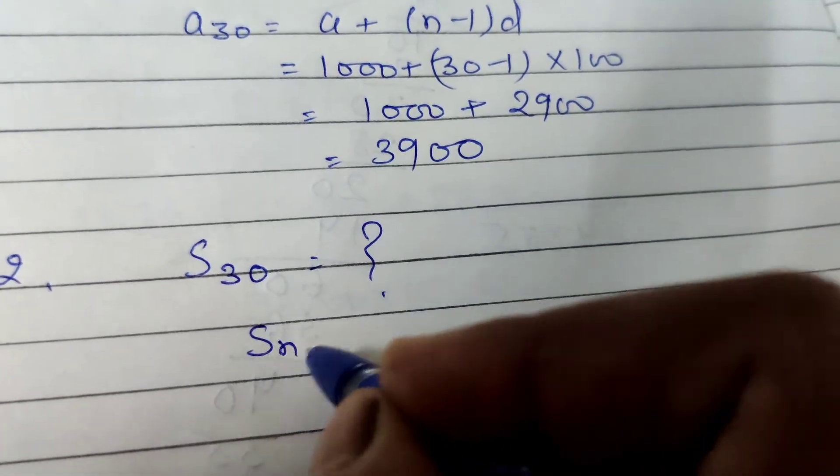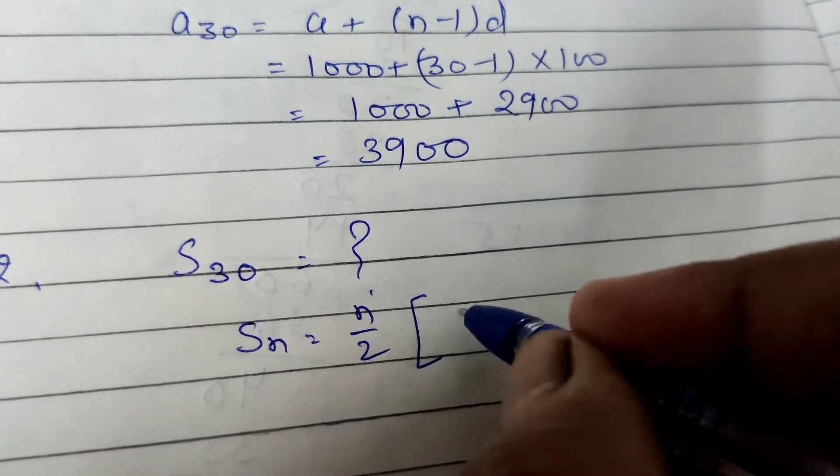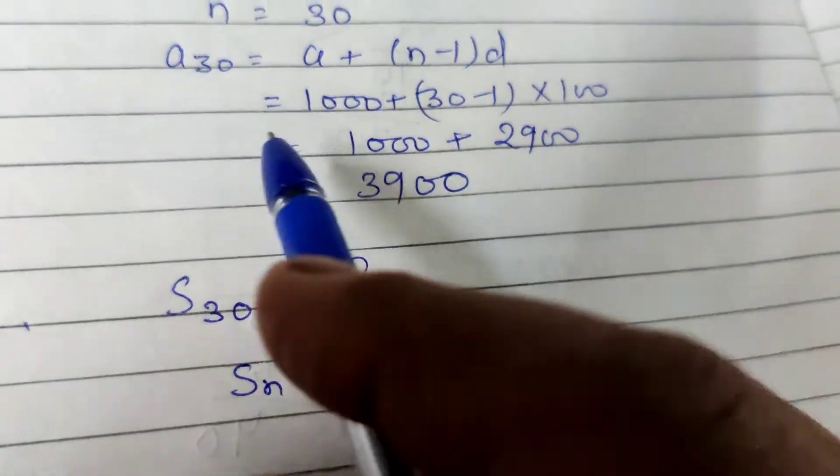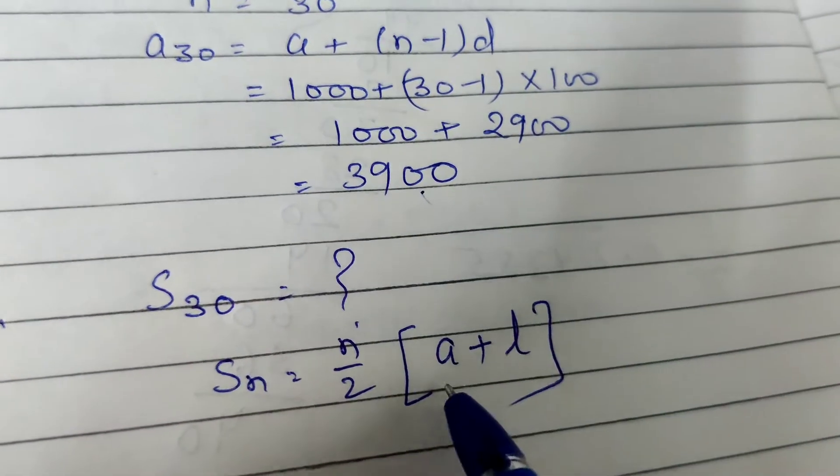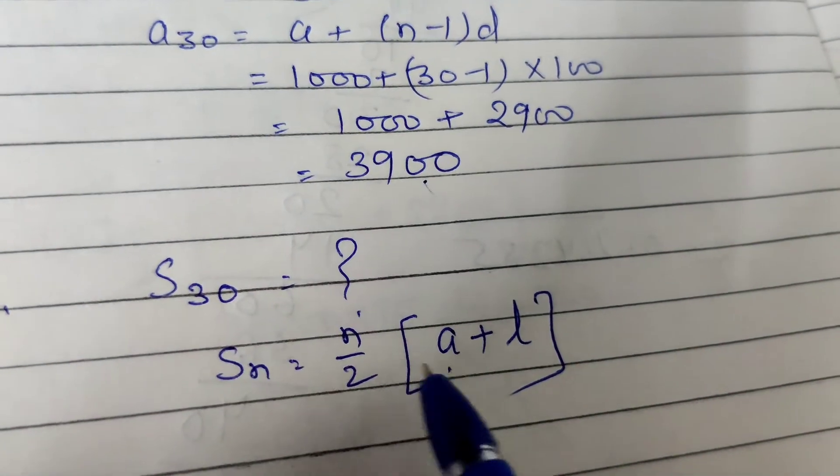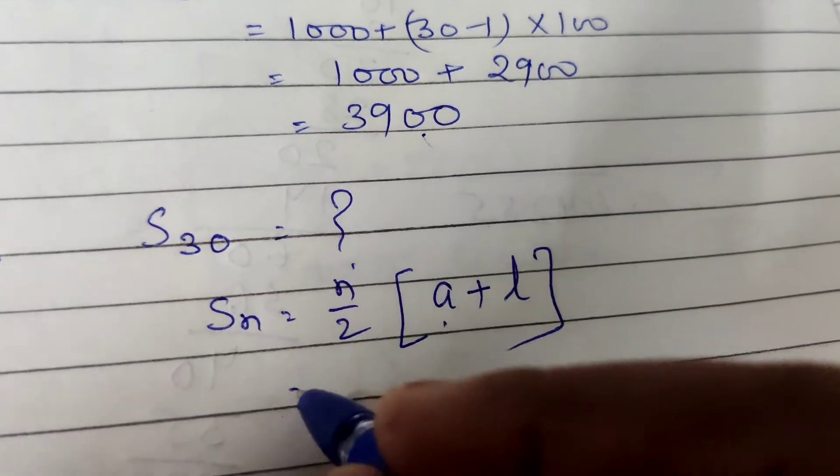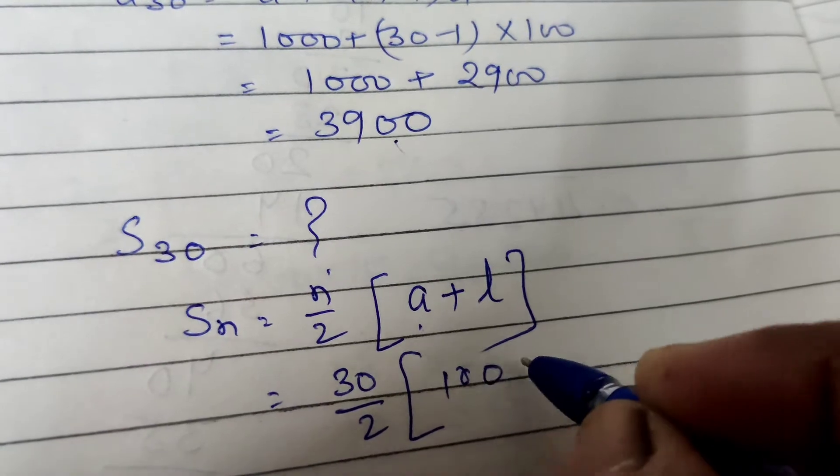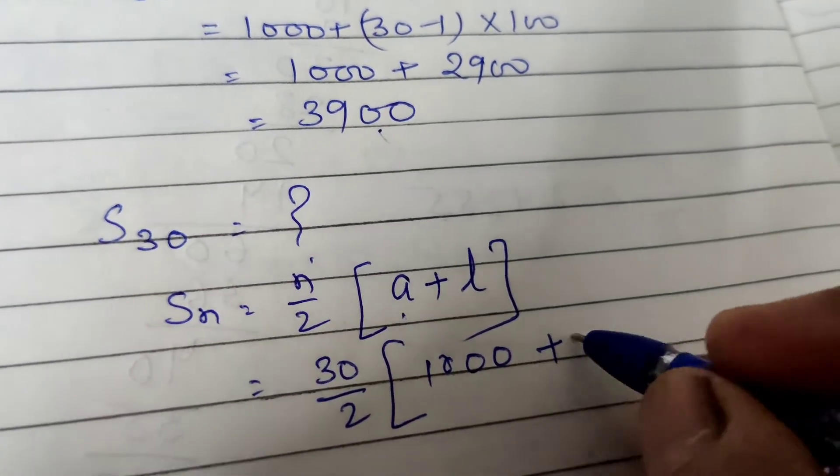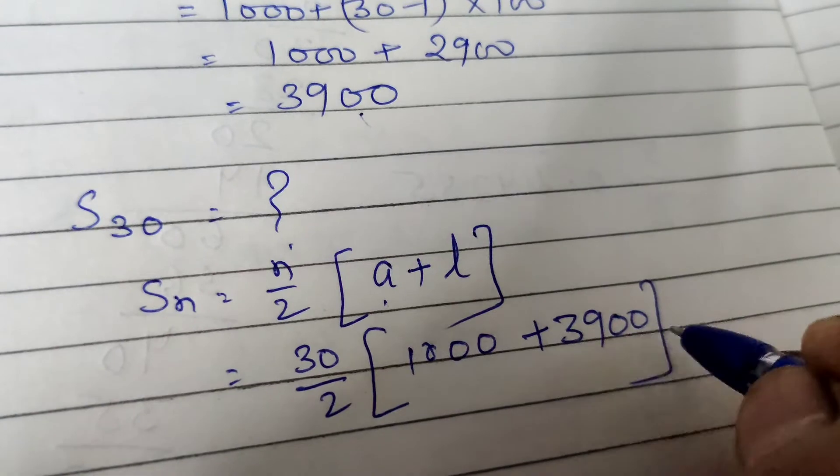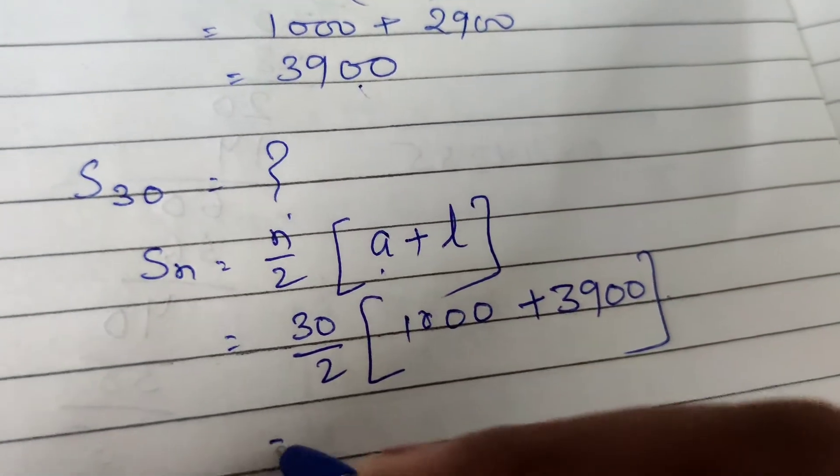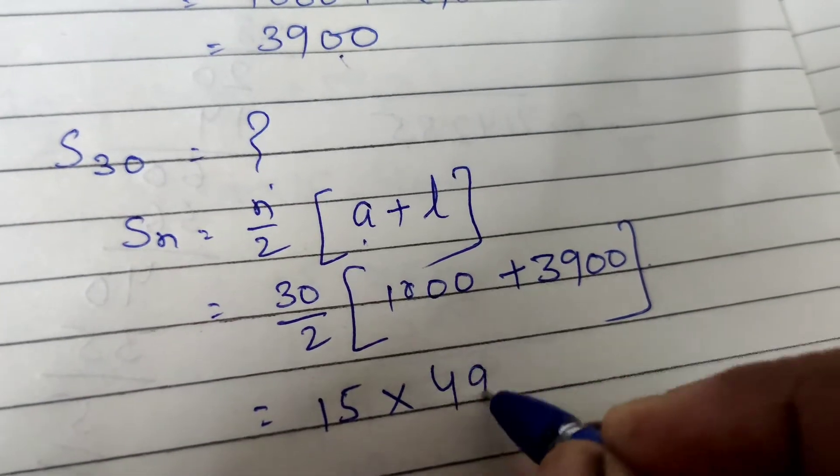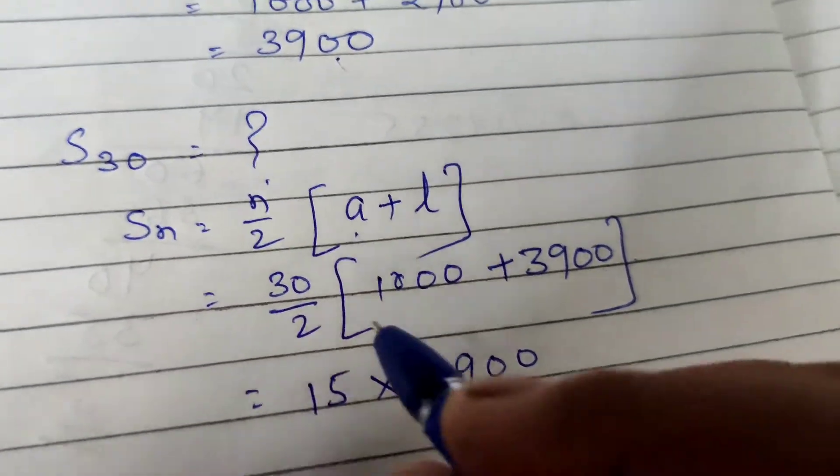Formula of SN equal to n by 2, A plus L. The 30th installment is 3900. A is 1000. N by 2, N is 30, 30 by 2. First installment is this and last installment, 30th installment is 3900. 15 into, which is equal to 4900. Now multiply 15 here.